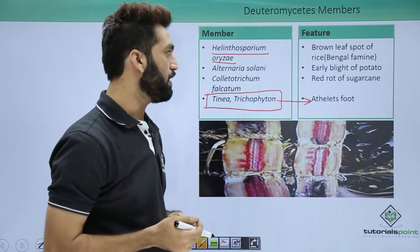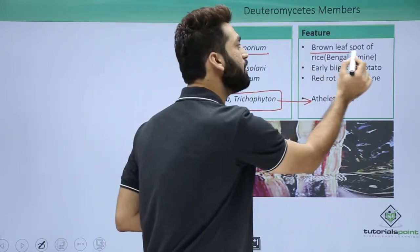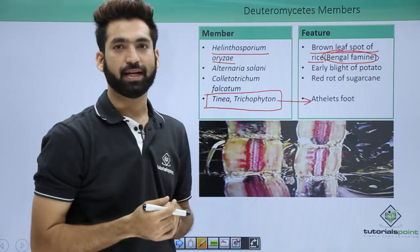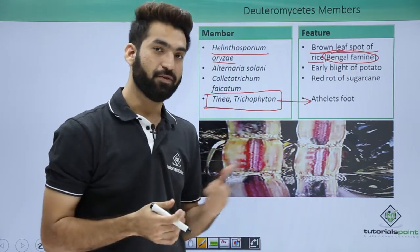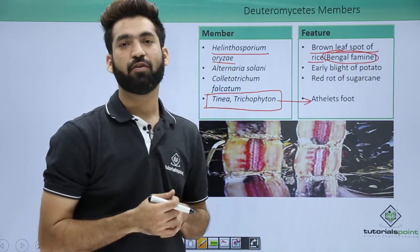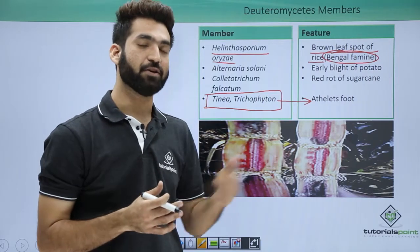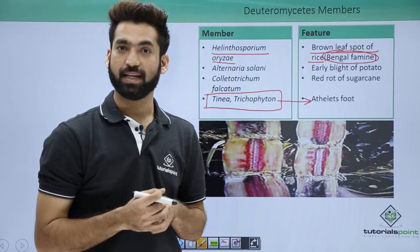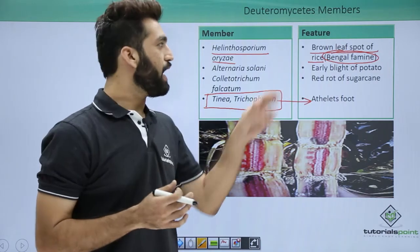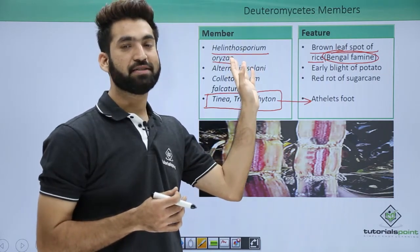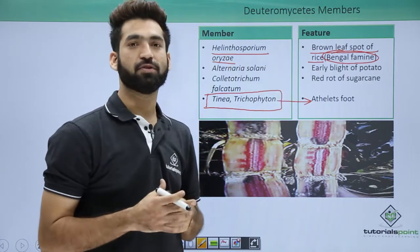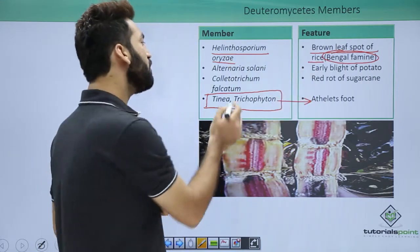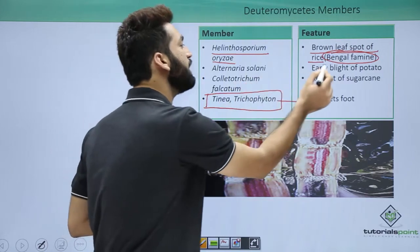One very important member is Helminthosporium oryzae, which causes brown leaf spot of rice. This is responsible for the Bengal Famine. You may recall that the Irish Famine was caused by Phytophthora infestans, which caused late blight of potato. Helminthosporium oryzae attacked rice — the major food crop — in West Bengal, leading to the Bengal Famine.